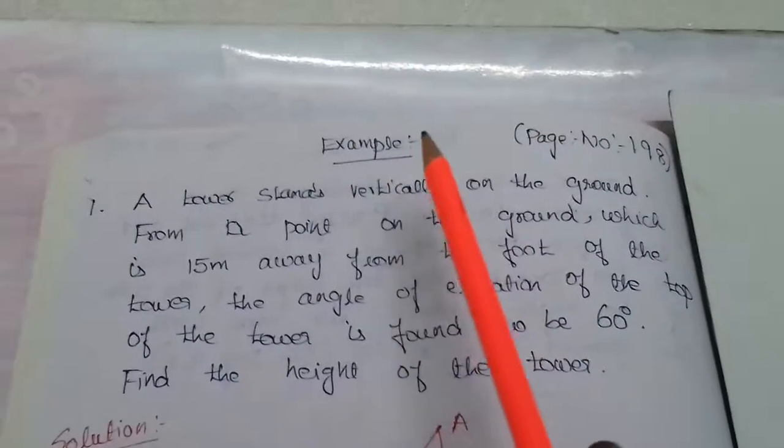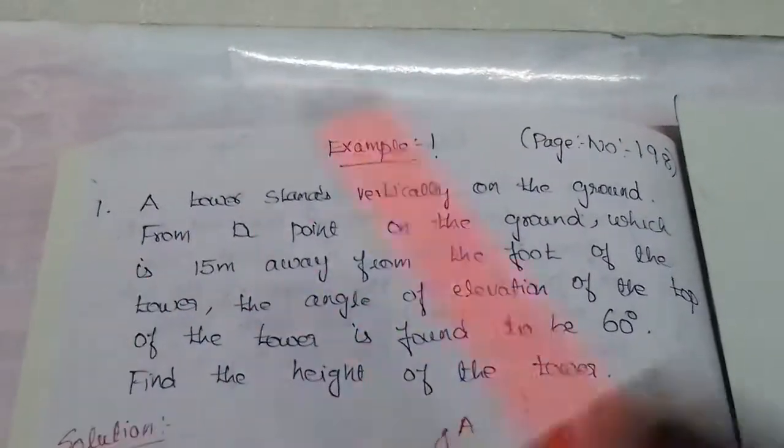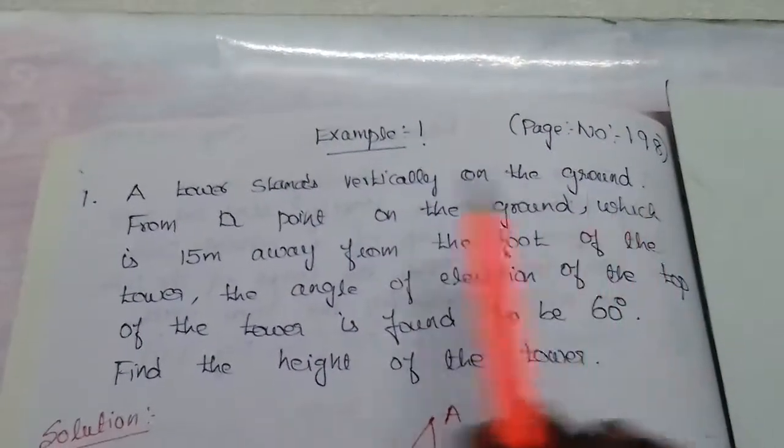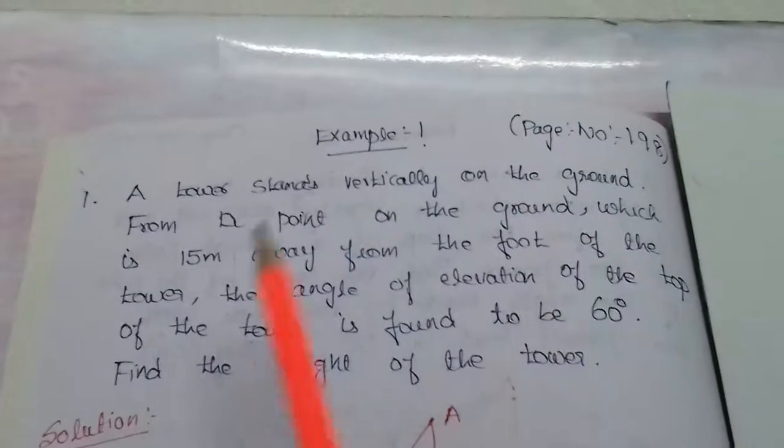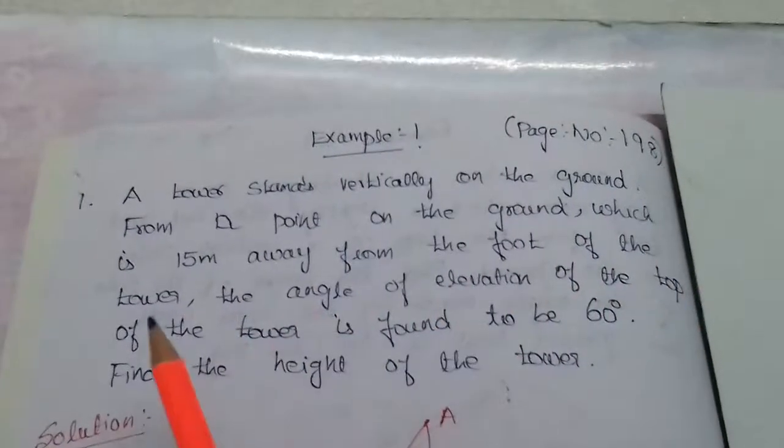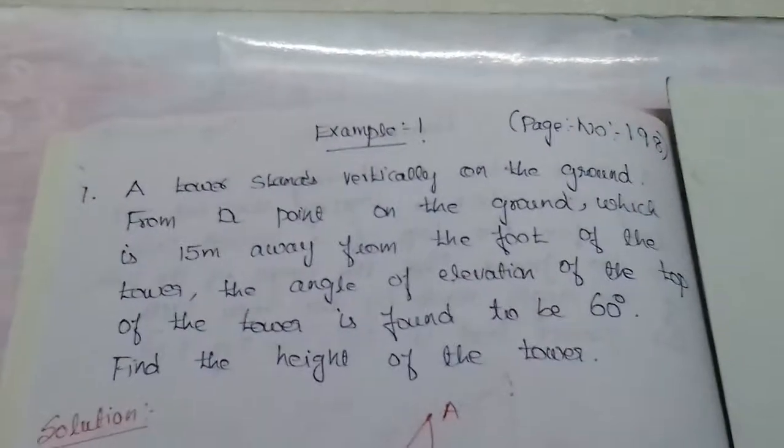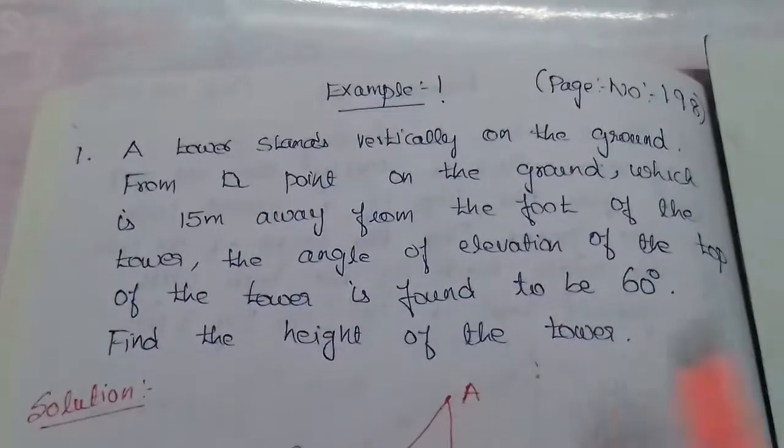Example 1: Applications of Trigonometry. A tower stands vertically on the ground. From a point on the ground which is 15 meters away from the foot of the tower, the angle of elevation of the top of the tower is found to be 60 degrees. Find the height of the tower.